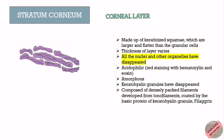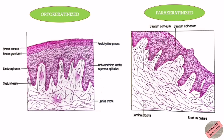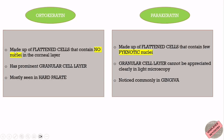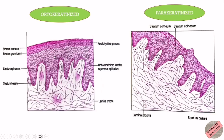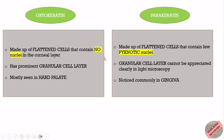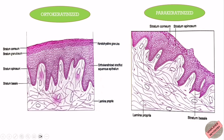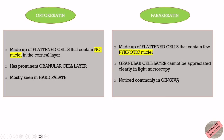The keratinized stratified squamous epithelium can be either orthokeratinized or parakeratinized. Orthokeratin is made up of flattened cells that contain no nuclei in the corneal layer, whereas parakeratin contains flattened cells with a few pyknotic (shrunken) nuclei. A helpful mnemonic: 'O' stands for zero, so orthokeratin has no nuclei; 'P' stands for pyknotic, so parakeratin contains pyknotic nuclei. Orthokeratinized epithelium has a prominent granular cell layer, whereas the granular layer in parakeratinized epithelium cannot be clearly appreciated under light microscopy. Orthokeratinized epithelium is mostly seen in the hard palate, and parakeratinized epithelium is mostly seen in the gingiva.